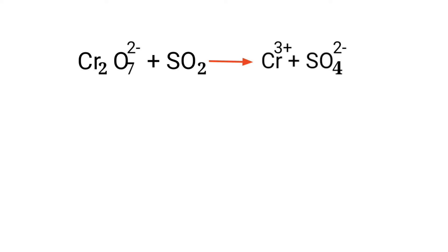First, figure out the reducing and oxidizing agents by the rules of assigning oxidation numbers. In the ion-electron method, one reaction is divided into two half-reactions, and then they are balanced and added together.